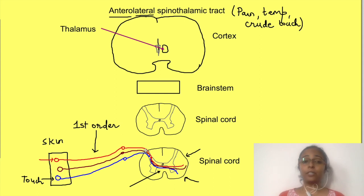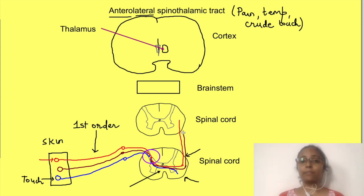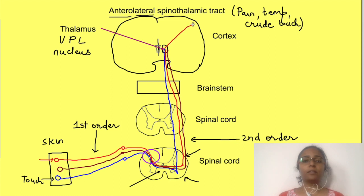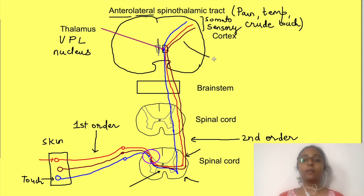Note that the synapse occurs in the grey matter where cell bodies of neurons are located, but the axons ascend in the white matter of the spinal cord. The second order neuron reaches the thalamus and synapses in the ventral posterolateral nucleus of the thalamus. From there, the third order neuron arises and reaches the somatosensory cortex via the internal capsule. This completes the anterolateral pathway.